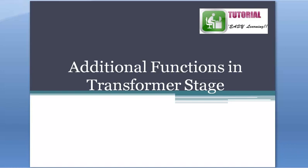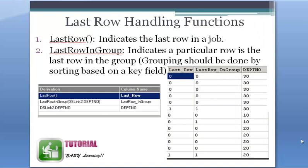So the first one is last row handling functions. There are a few functions in the transformer stage and this is one of them. It is used, but it depends on the scenario. Last row obviously — if you use this function it's going to give some output so that we can know that a specific row is the last row. So basically, it indicates the last row in the job, but not in all partitions.